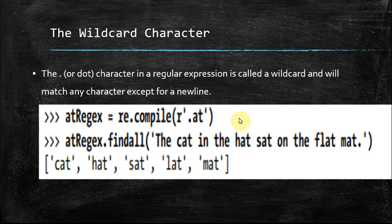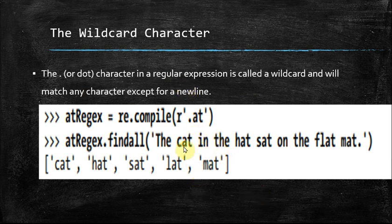The dot character is a regular expression wildcard character which will match a single character except the newline. Other than the newline, it will match any single character. So dot is a wildcard character that matches any character except the newline character.